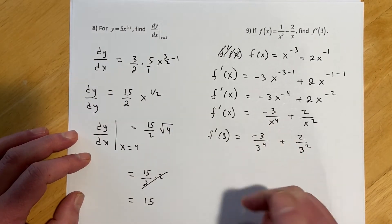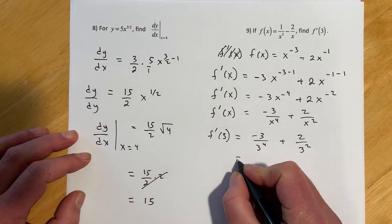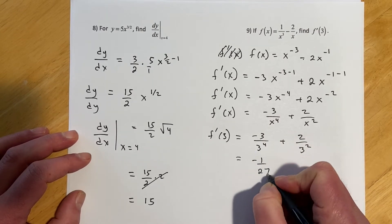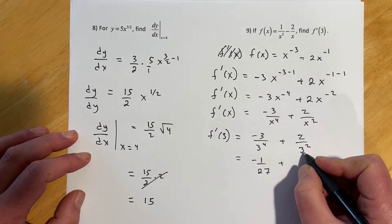So there, one of those 3s would cancel, and that would leave me negative 1 over 3 cubed, which would be 27, plus 2 over 9.